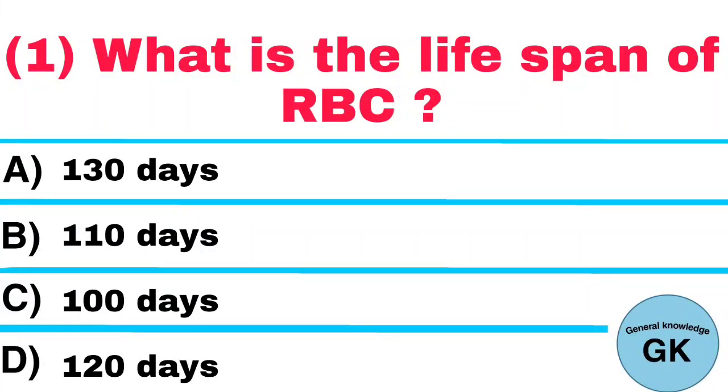Question number 1. What is the lifespan of RBC? A. 130 days. B. 110 days. C. 100 days. D. 120 days. Answer: 120 days.